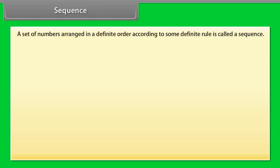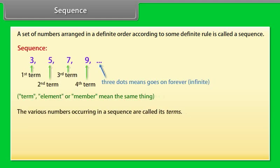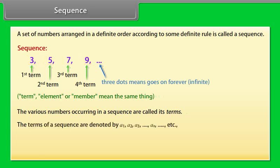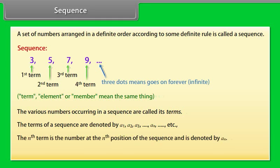A set of numbers arranged in a definite order according to some definite rule is called a sequence. The various numbers occurring in a sequence are called its terms. The terms of a sequence are denoted by a1, a2, a3, till an, etc. The nth term is the number at the nth position of the sequence, and is also called the general term.